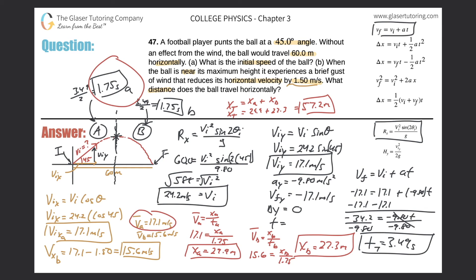So the ball lands a little short of 60 meters — at 57.2 meters. As a quick mental check: Part A gave 29.9 meters, essentially 30. Without any slowdown, doubling that gives 60, which matches the original no-wind range of 60 meters. Everything checks out! Make sure to hit that subscribe button — thanks for tuning in, and I look forward to seeing you in the next lesson.